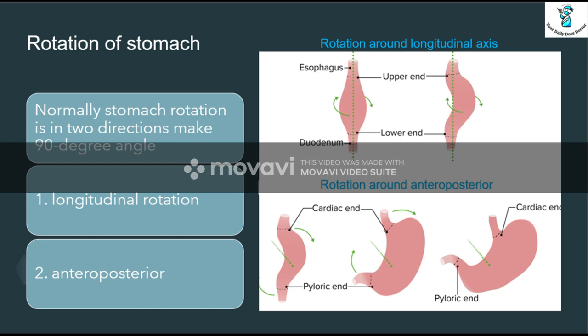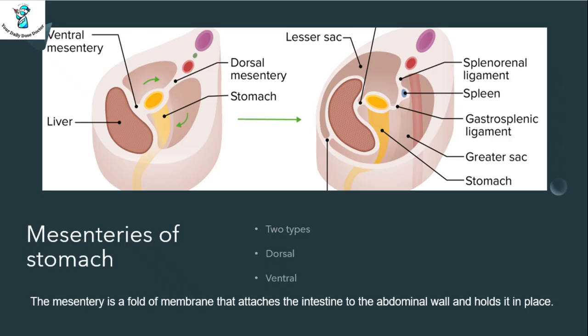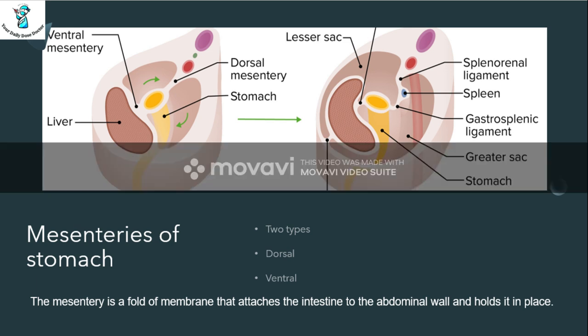The vagus nerve also rotates in this position in the anterior-posterior axis. The cardiac region moves downward and to the left side, while the pylorus region moves rightward and upward.